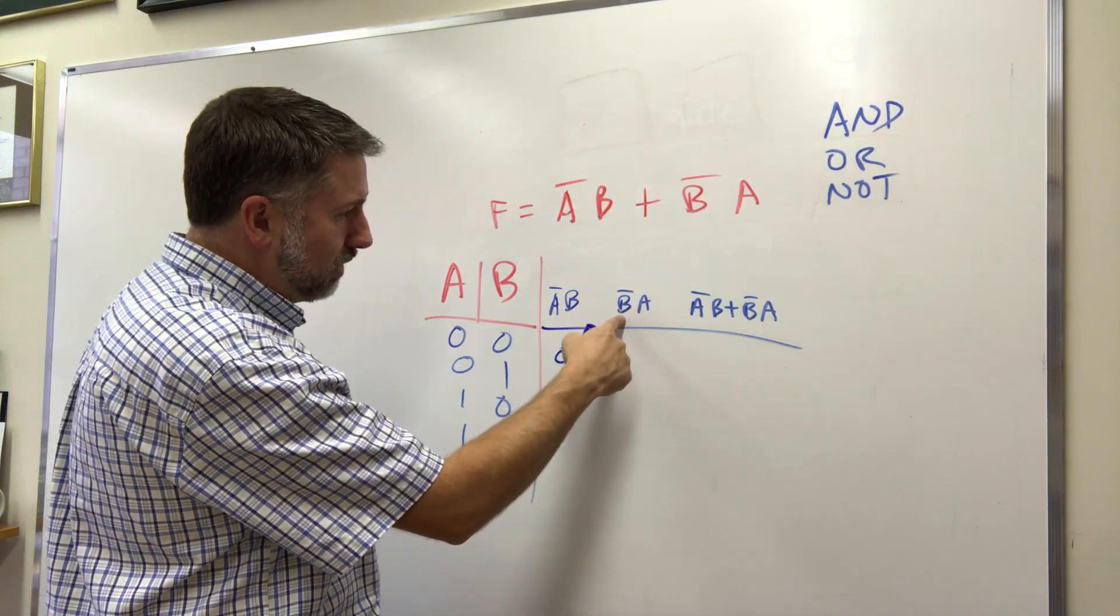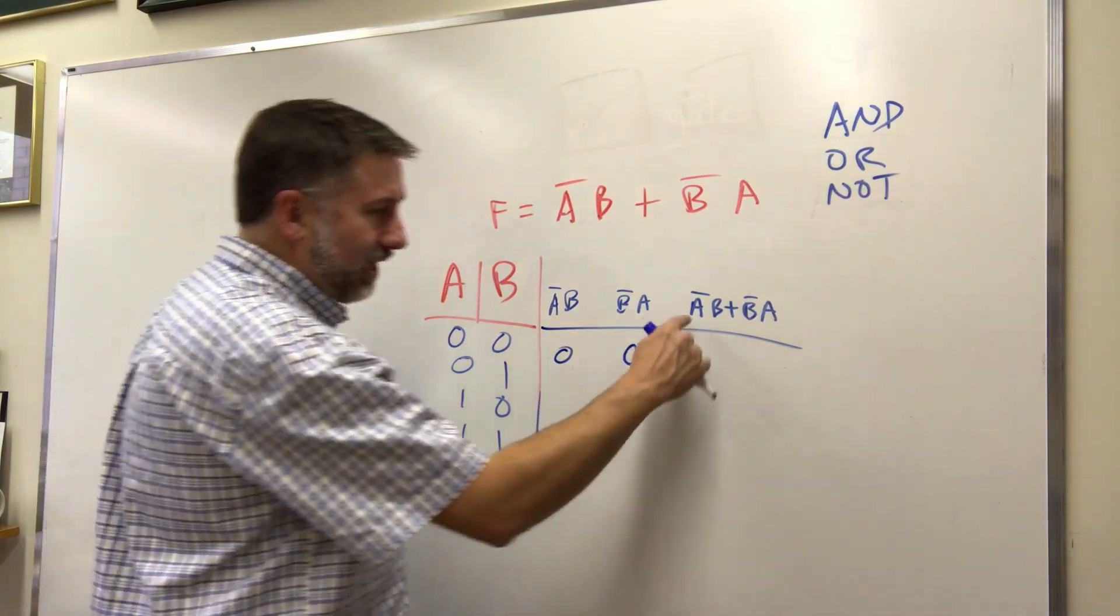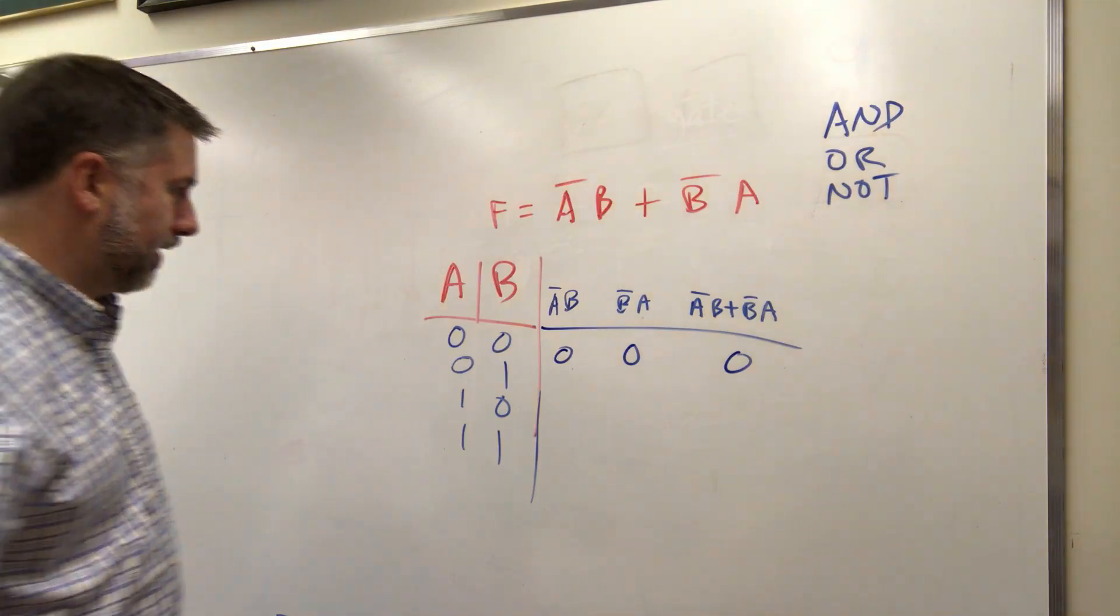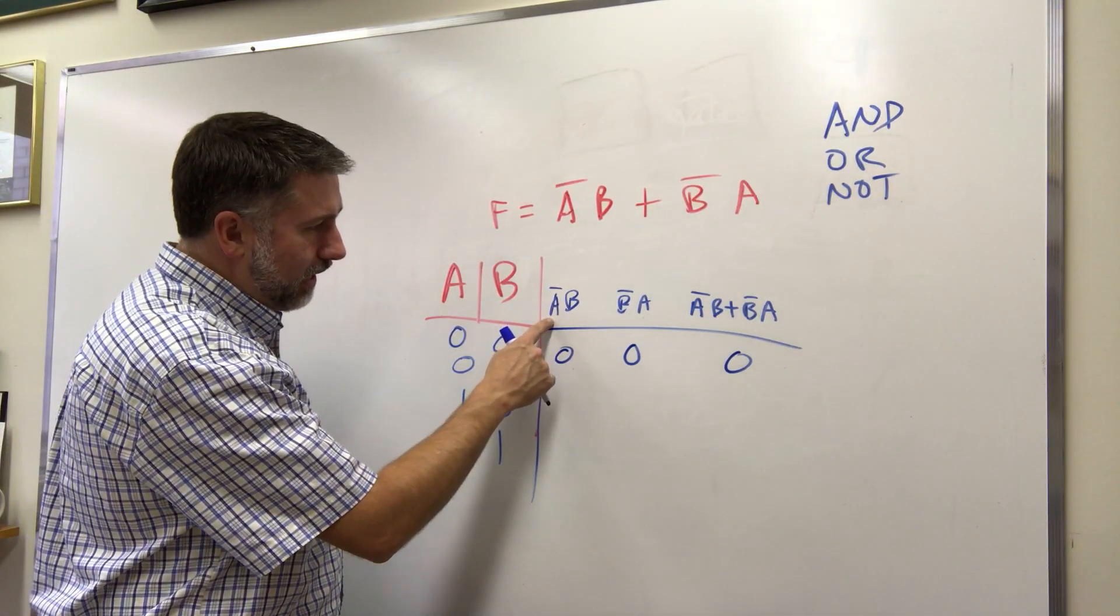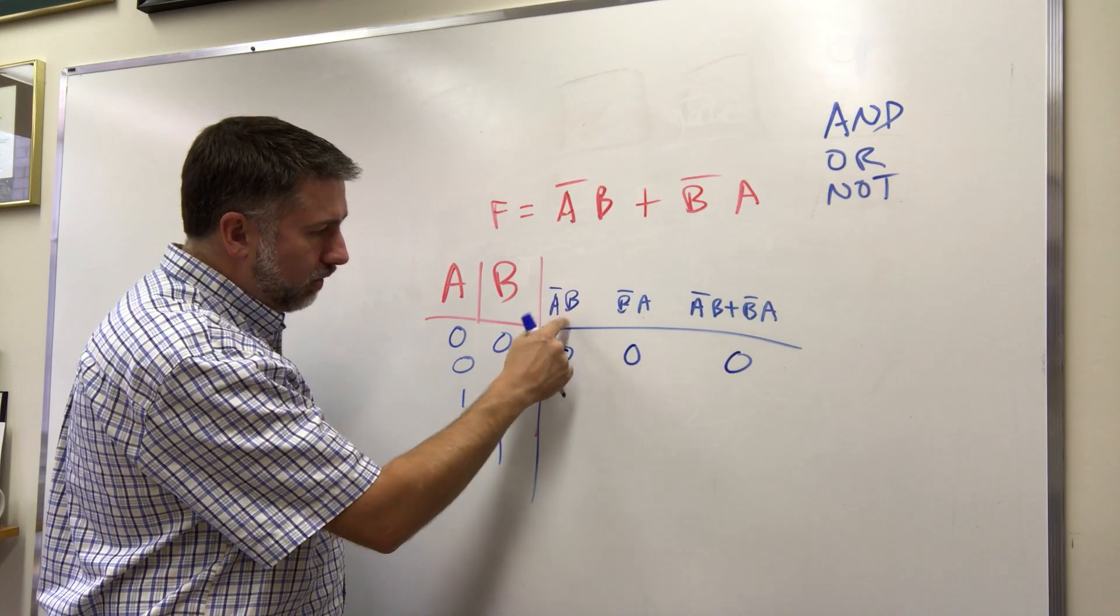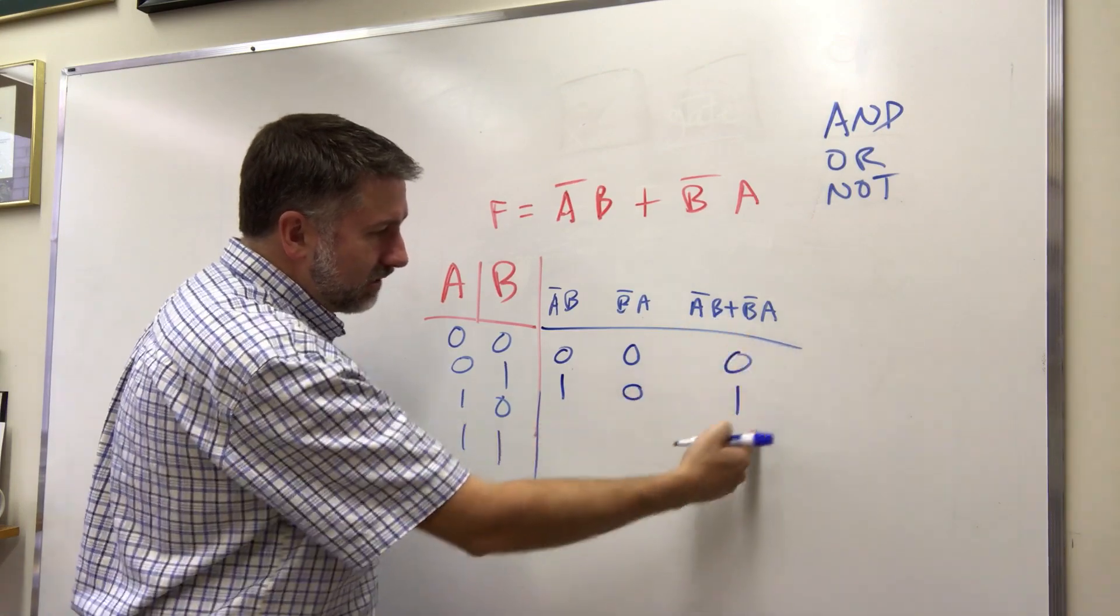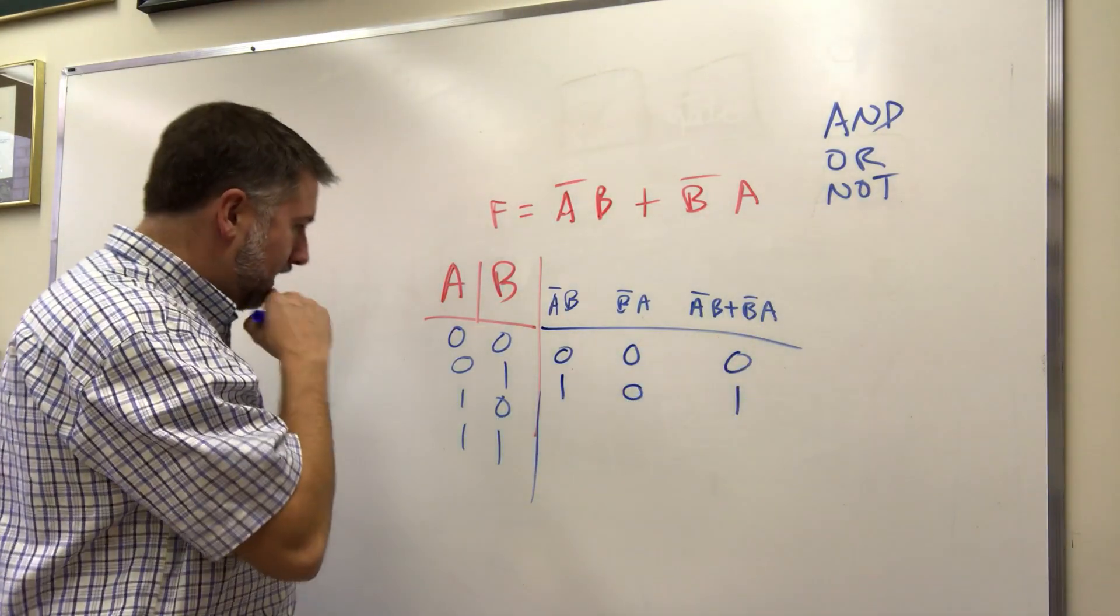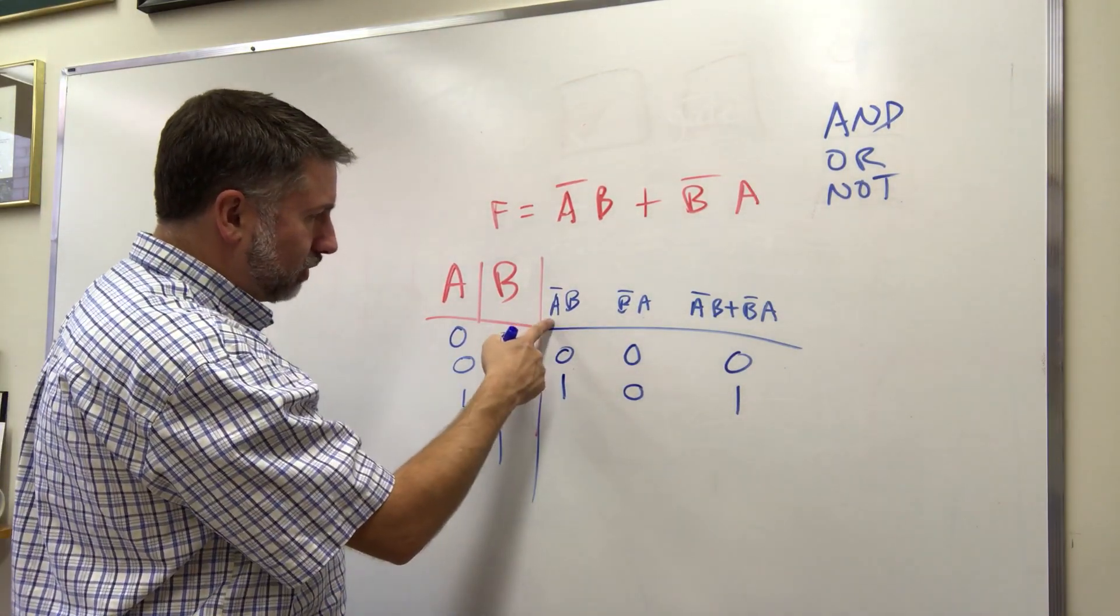If A is zero and B is zero then A prime is one, B is zero, one and zero. Remember and is true only if both of them are true right so that's zero. Same here B prime is one but A is zero so that means they're both zero so that means that this is zero. A zero B is one, if A is zero A prime is one, B is one, one and one is one, that's a zero but or them together and you get one right, one or zero is one.